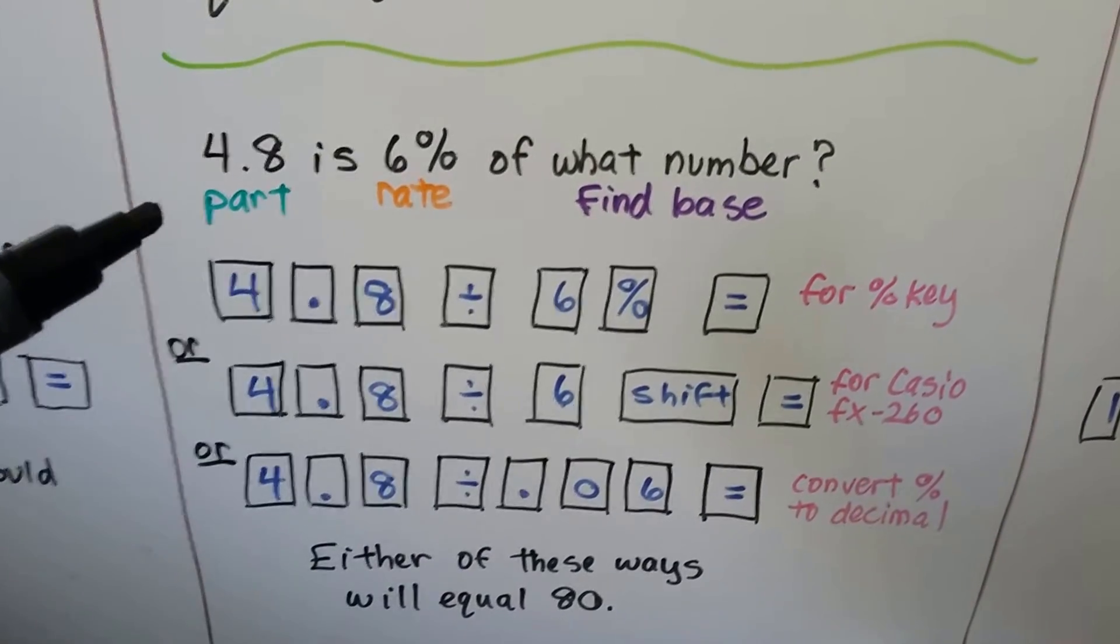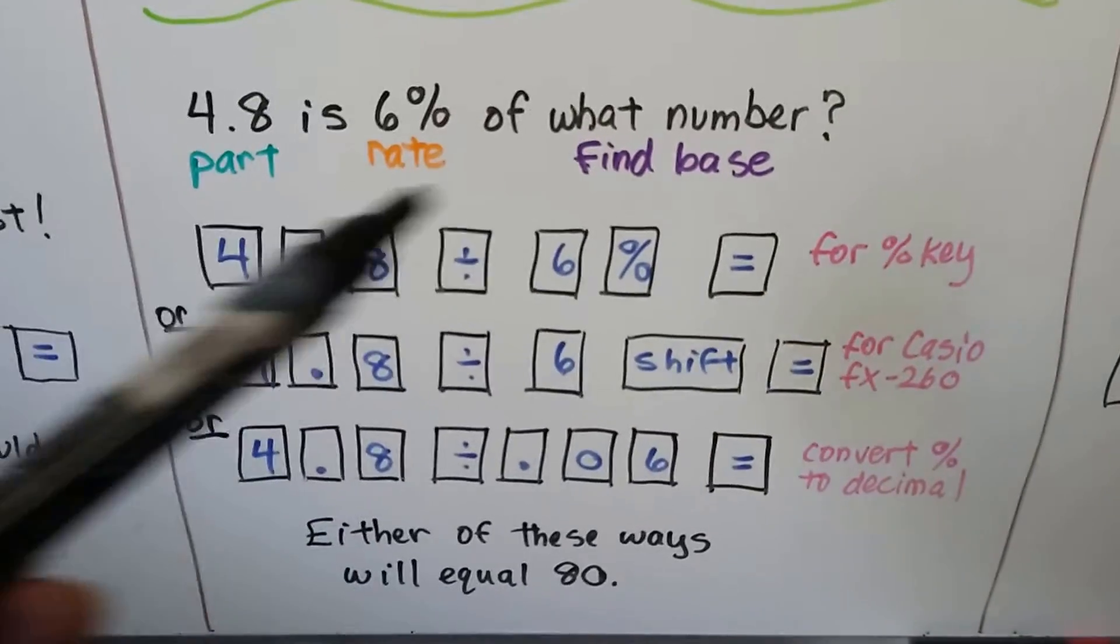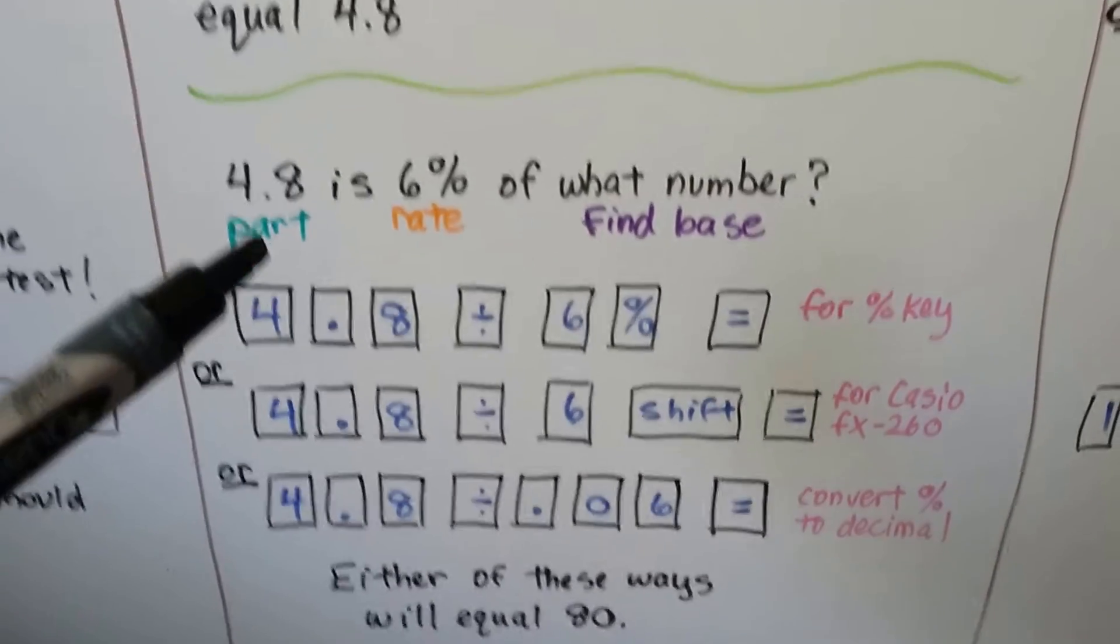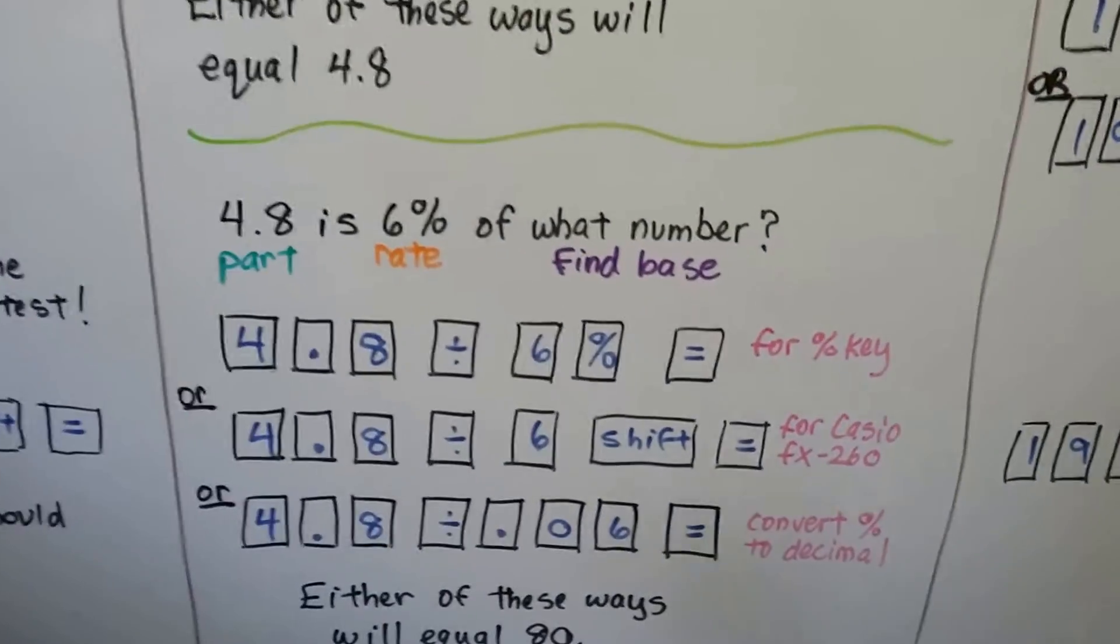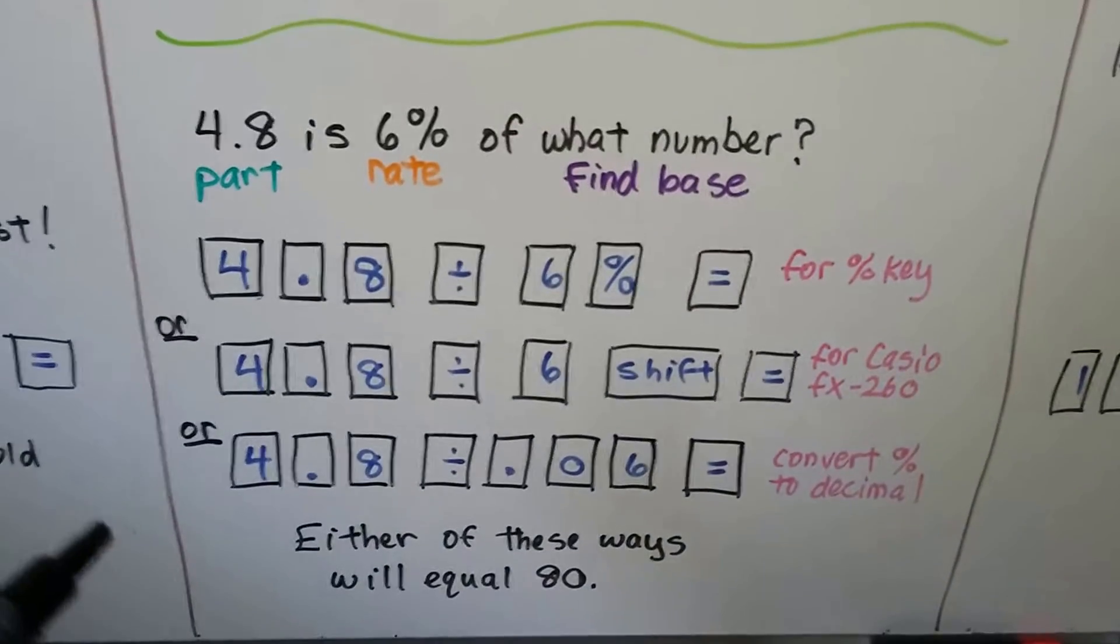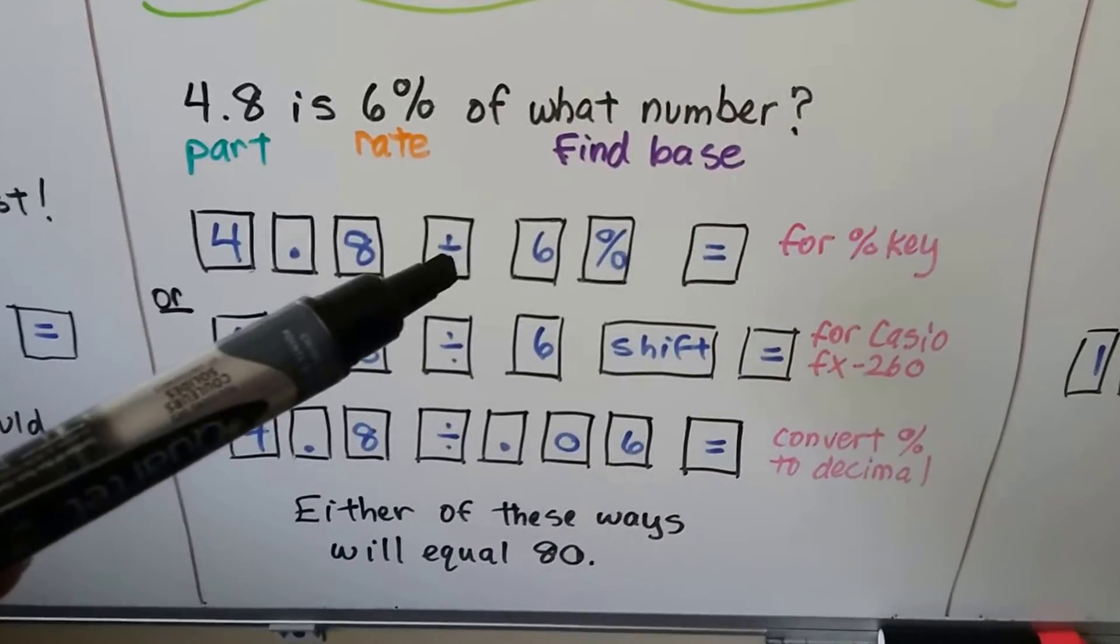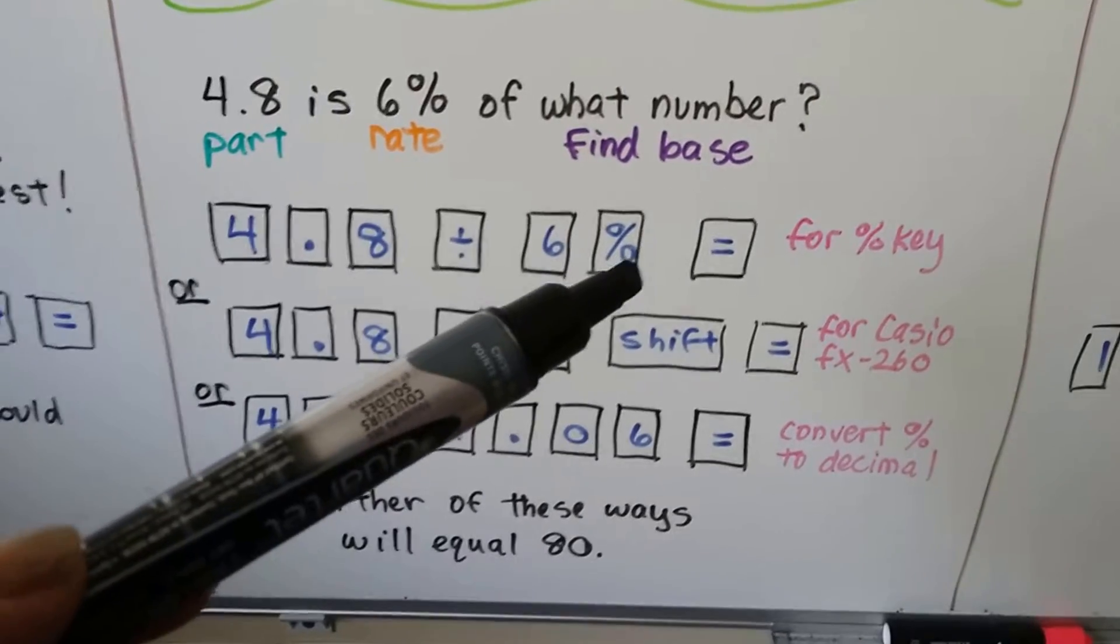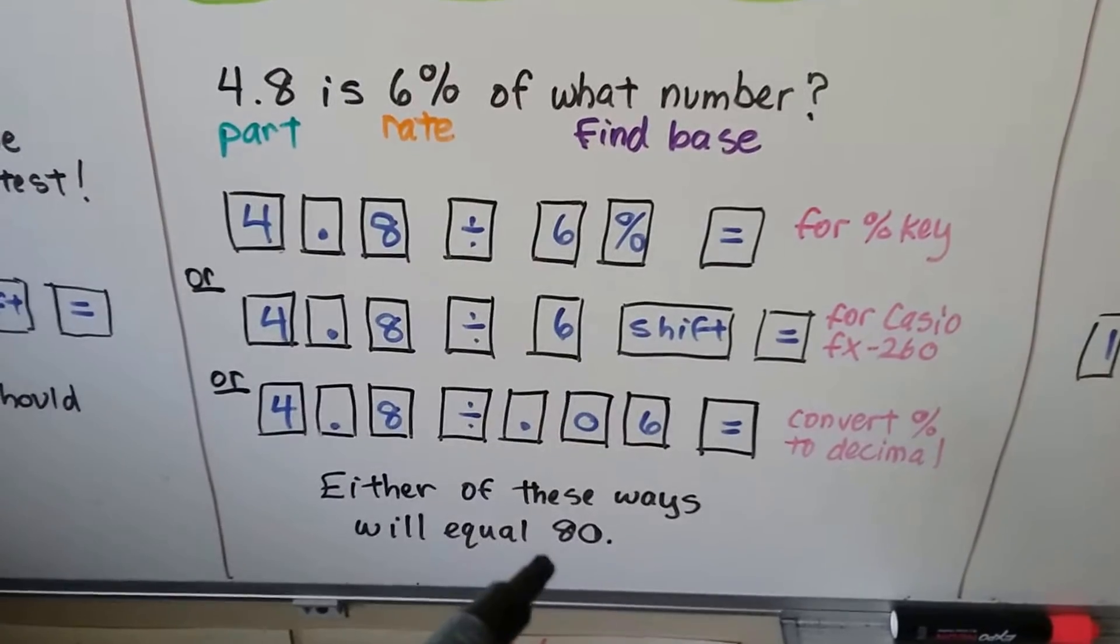For this one it says 4.8 is 6% of what number? So now they gave us the 4.8 and now that 80 is missing. I just flipped it around to show you if the base was missing. We would put 4, decimal point, 8, division sign, 6, hit the percent key and equals, and that would tell us 80.